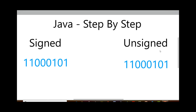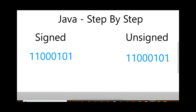Let's see what the value is when the number is unsigned — it's easier to calculate. A 1 in each bit position contributes: 1, 2, 4, 8, 16, 32, 64, and 128. Adding the relevant bits together gives 128 + 64 + 4 + 1, which equals 197. So this 8-bit number, if unsigned, gives a value of 197.